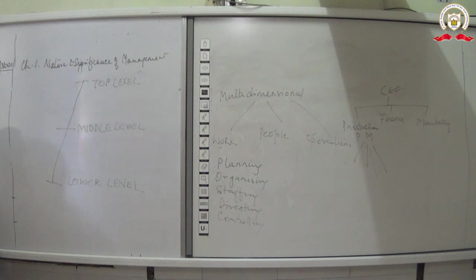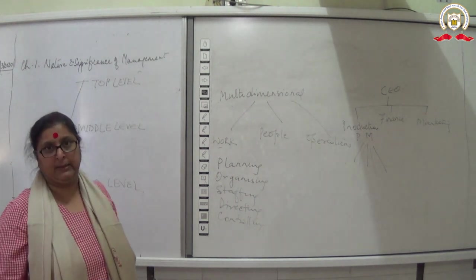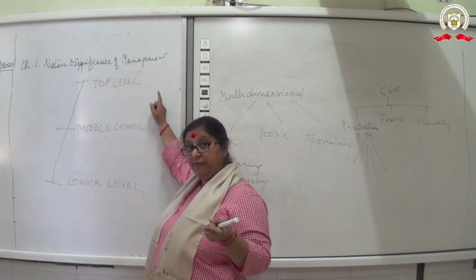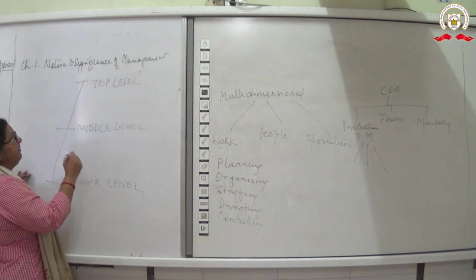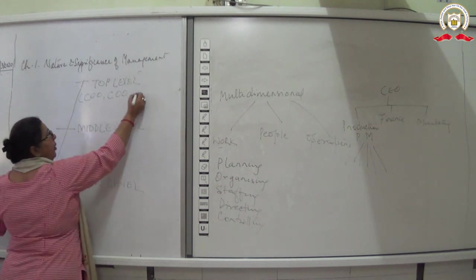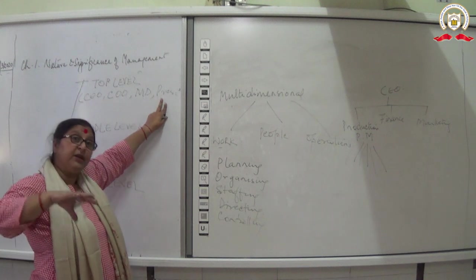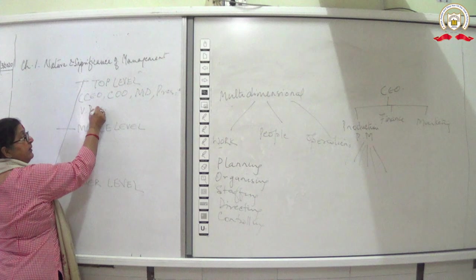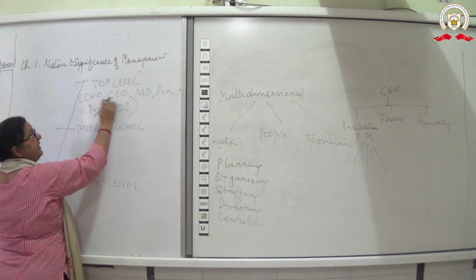A board question may ask you to identify the level of management. The top level includes designations like CEO (Chief Executive Officer), COO, Managing Directors, Presidents — such as President of Finance or President of Marketing — Vice Presidents, and the Board of Directors.